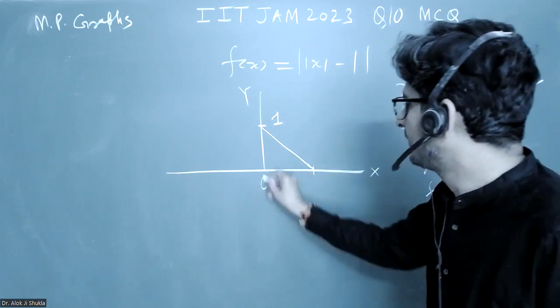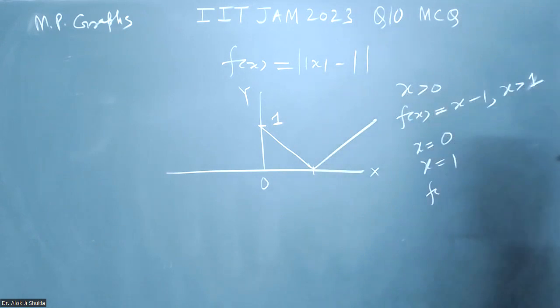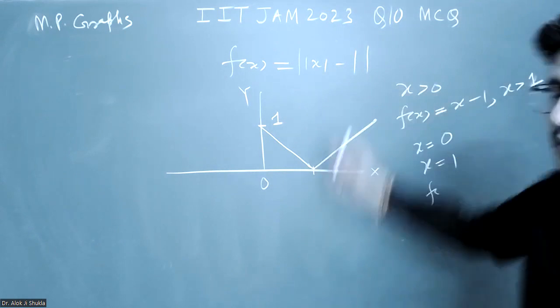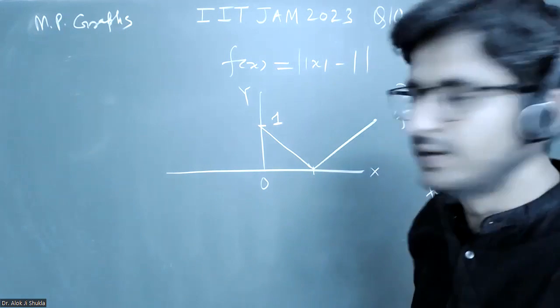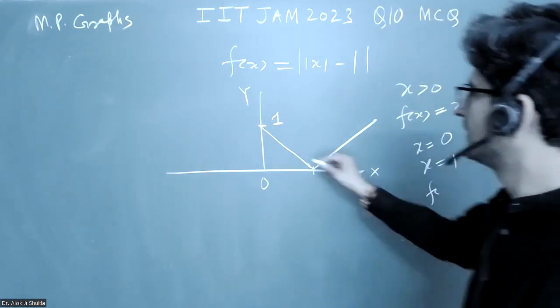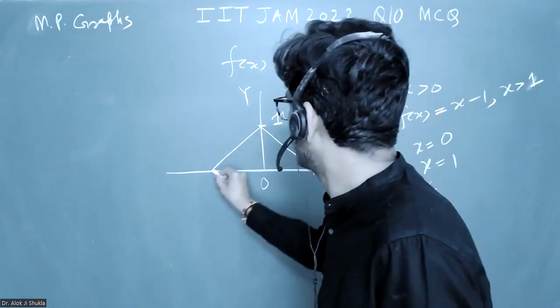So that means a positive slope and intercept will be somewhere here, so it will be like this. Now this is a modulus function which is always an even function, so whatever you are seeing this side must be on this side also. So just draw it like this and this is your final graph.